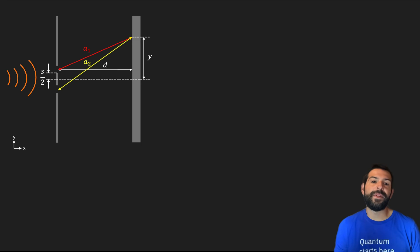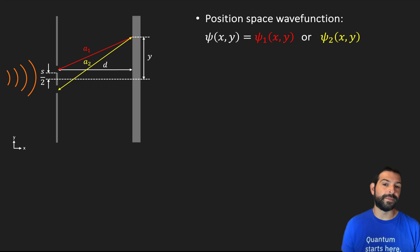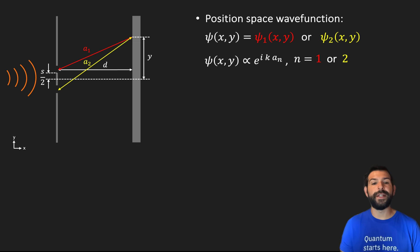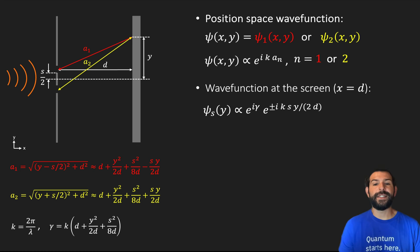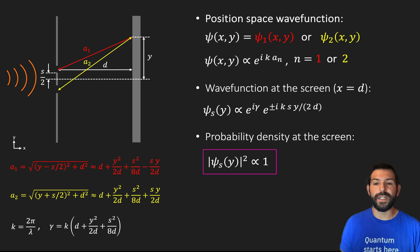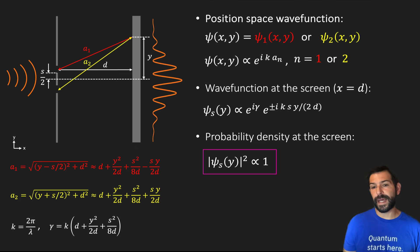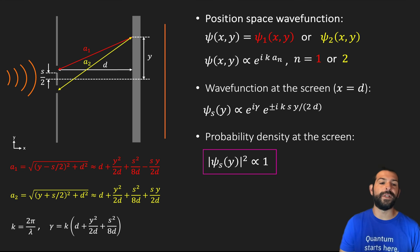In the case where we perform a measurement right at the slits, what we get instead of a superposition of the two waves is either the wave from the top slit or that from the bottom slit — a single plane wave from either distance a1 or a2. If we evaluate x at the screen, we get a wave function with only one exponential term, either with the positive or negative sign. So when computing the probability density, all we get is a constant value of 1, meaning instead of an interference pattern, we get a straight line denoting an equal likelihood of finding the particle at any point on the screen.